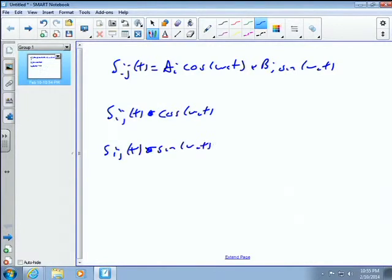Suppose I take S_i of T and multiply it by cosine omega_c T. If you multiply this, you have a cos times a cos, and a cos times a sine. What's the identity? It's a double frequency term. And what's a cos times a cos? We have a DC term plus a double frequency term. And a sine times a sine, we have a DC term minus a double frequency term.